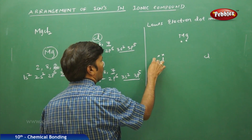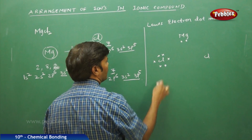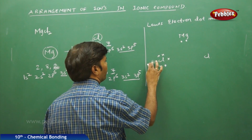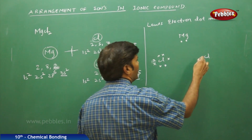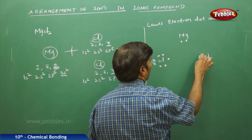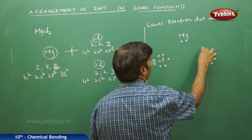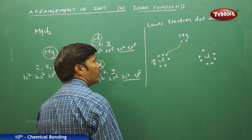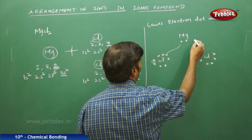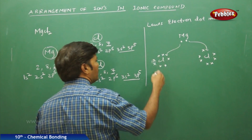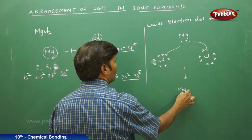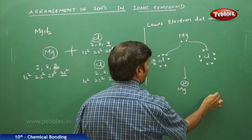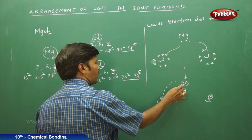After the transfer, the structure results in Mg²⁺ and two Cl⁻ ions. The strong electrostatic force of attraction operates between the magnesium cation and the two chloride anions.